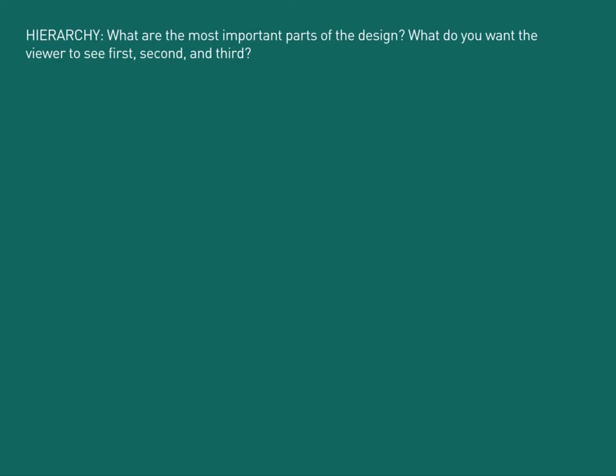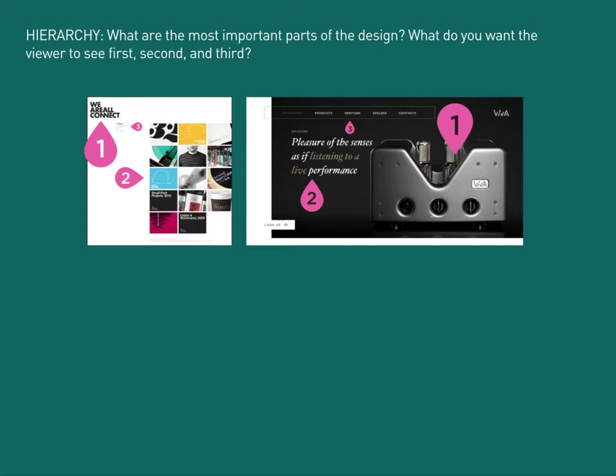Here are a couple of examples. Typically, you could argue that either this logo or this grid of images is the first and second things you see. And then this small bit of navigation here is the third thing you see. So they've got a clear set of hierarchy: one, two, and three.